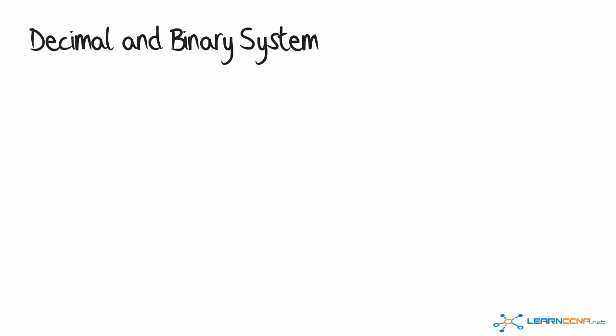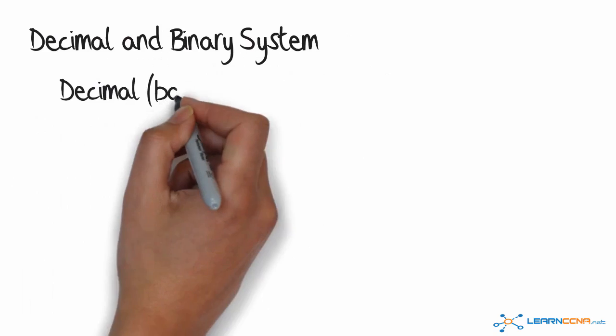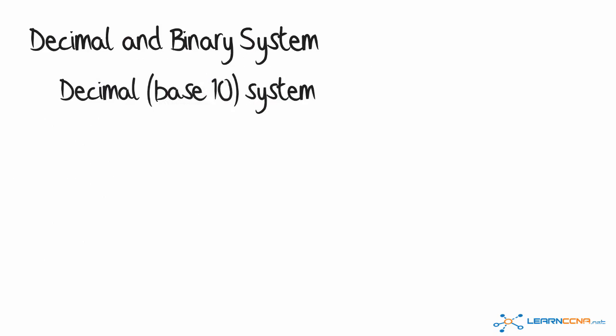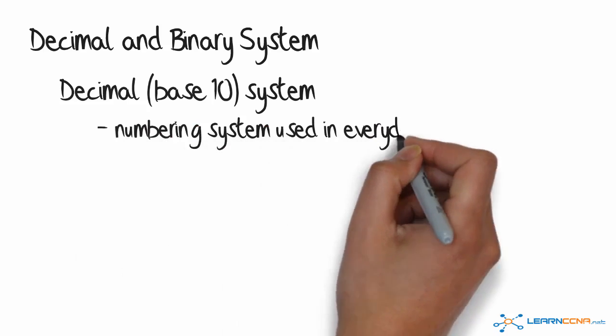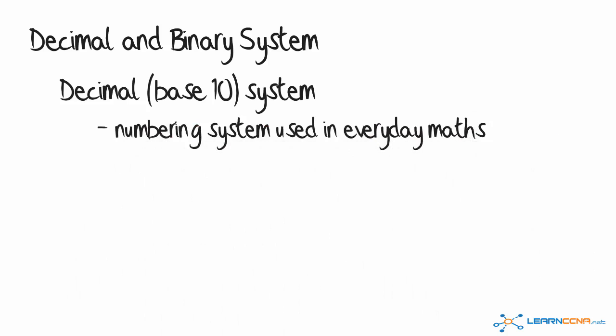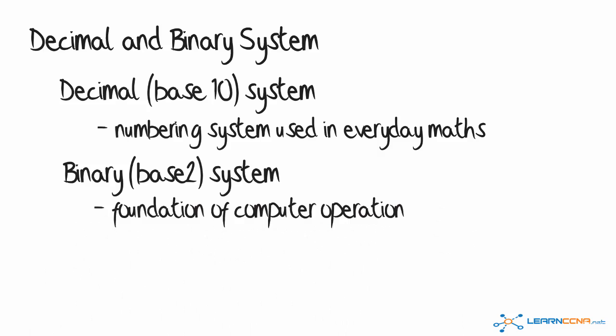Now let's do a quick comparison between decimal and binary systems. Decimal is based on a 10-based system, where it has values from zero to nine. This is the numbering system used in everyday mathematics. Binary, however, is a two-based system, which is the foundation of computer operations. Once again, we have two values, either zero or one. This is what we're going to concentrate on throughout the rest of this video, so all examples are going to be using a combination of zeros and ones.